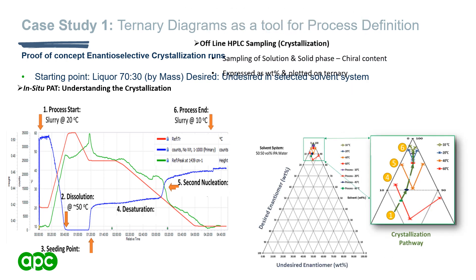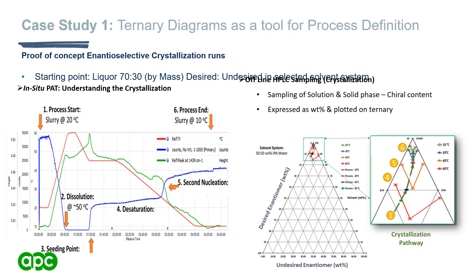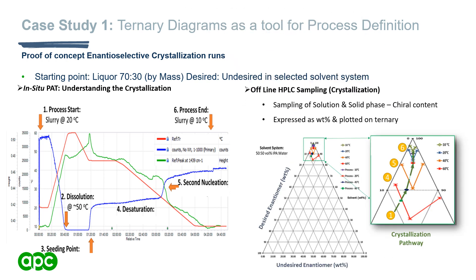Tracking by HPLC for the mother liquor and solids, we see an initial desaturation yielding the desired enantiomer, with the undesired enantiomer remaining largely in solution. However, we do observe a secondary nucleation at 30°C with desaturation of both enantiomers. Transferred to our ternary phase diagram, we can track the process from seeding, to desaturation, to secondary nucleation as we cross the phase boundary, building supersaturation of the undesired enantiomer, up to our isolation point at the eutectic composition.